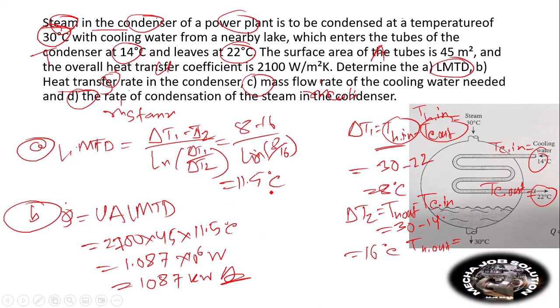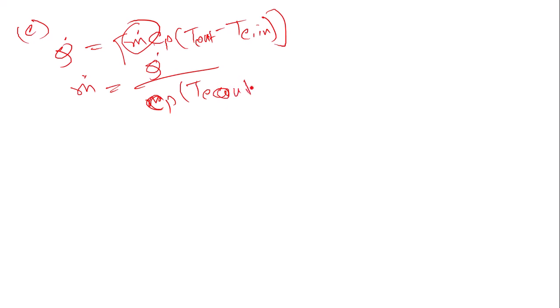For part c), we need to find the cooling water mass flow rate. The heat transfer rate formula is Q equals mass flow rate times Cp times (T out minus T in). From this, mass flow rate equals Q divided by Cp times (T cooling out minus T cooling in).